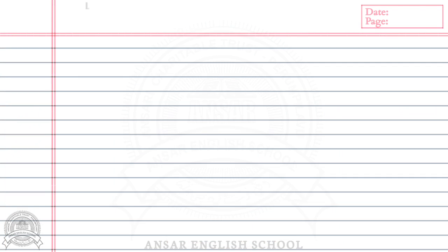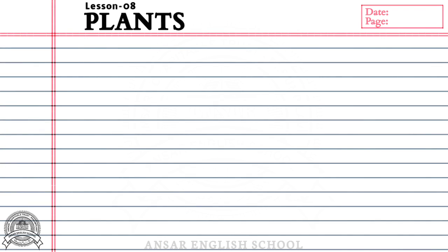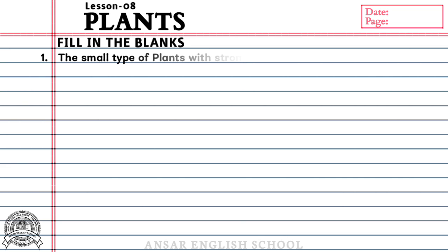Lesson 8 Plants — Fill in the blanks. Question number 1: The small type of plants with strong stems are called dash. Answer: Shrubs.